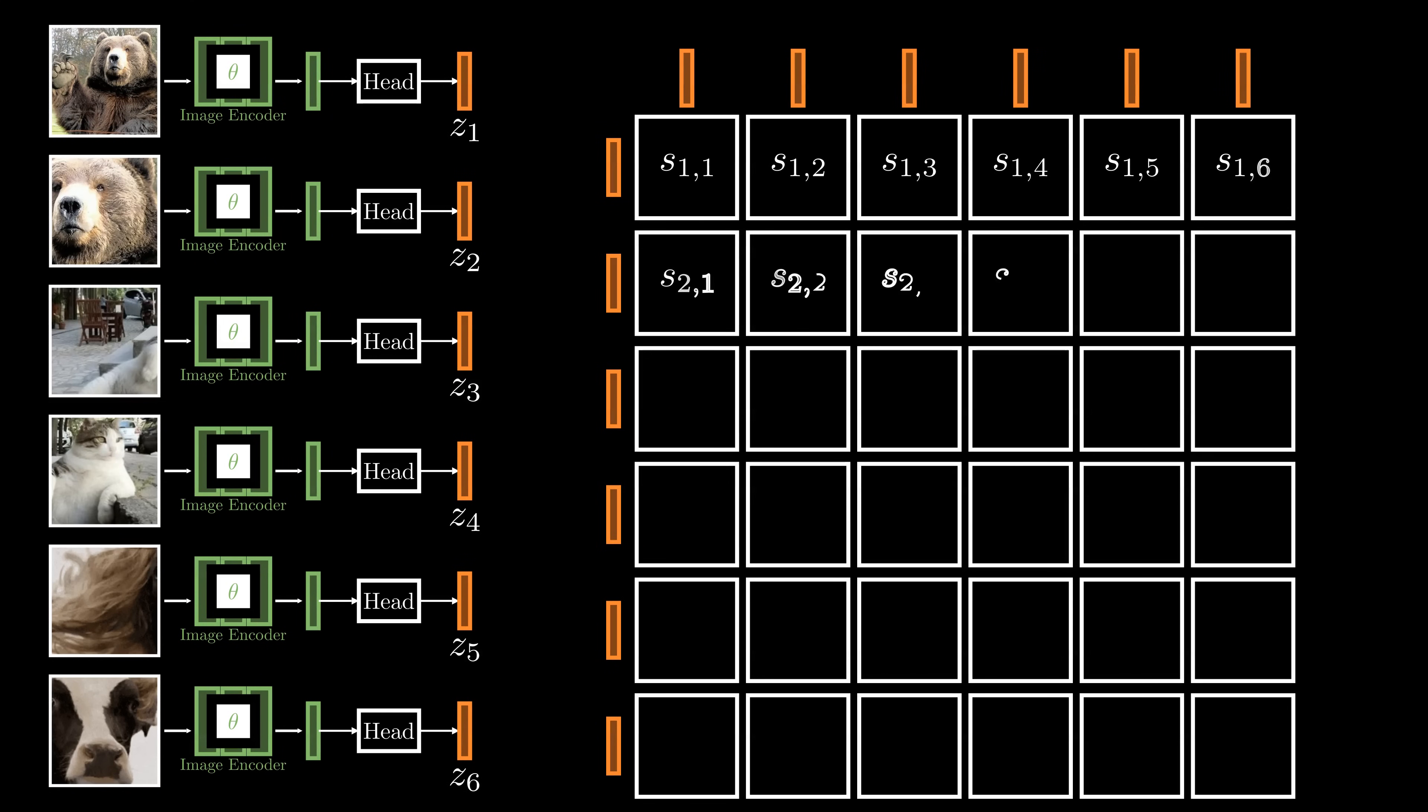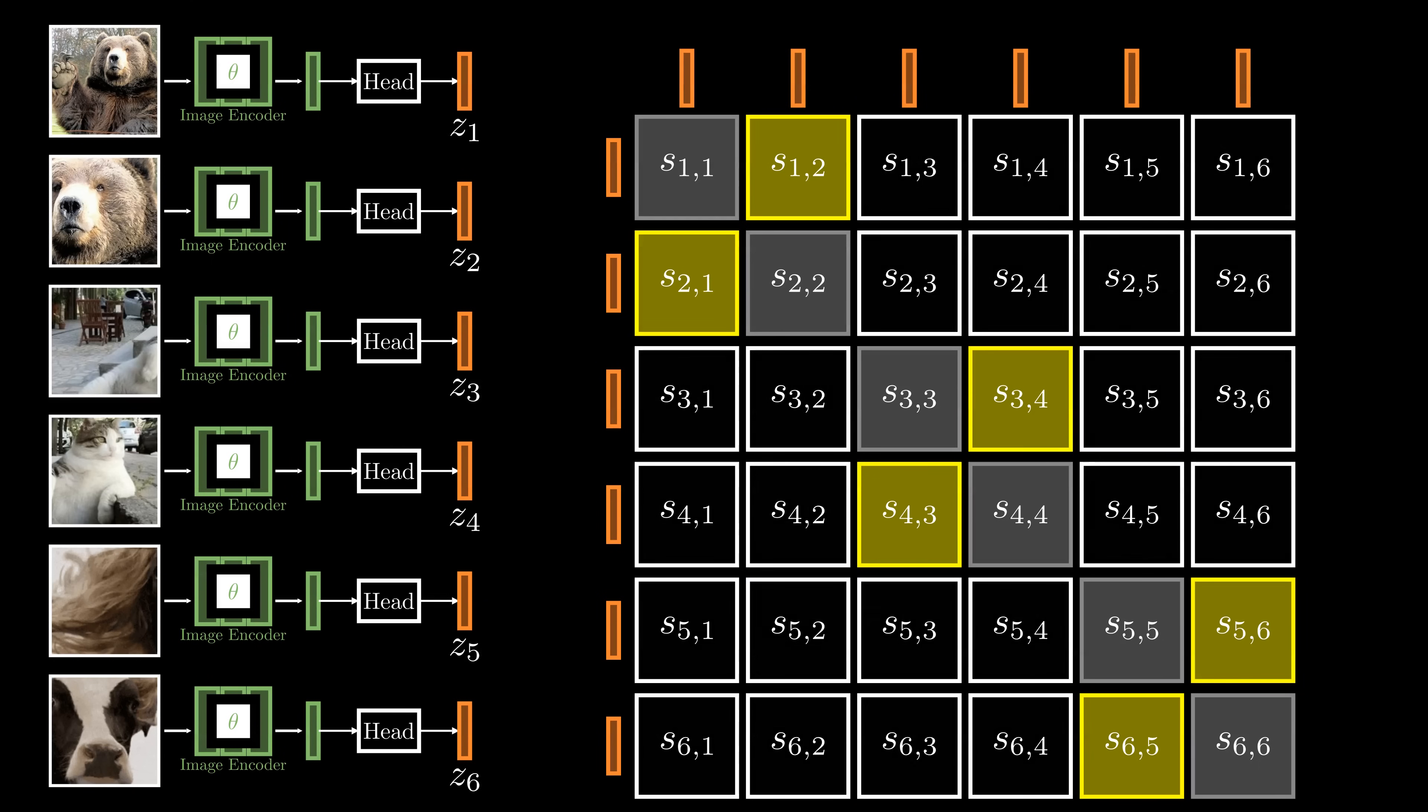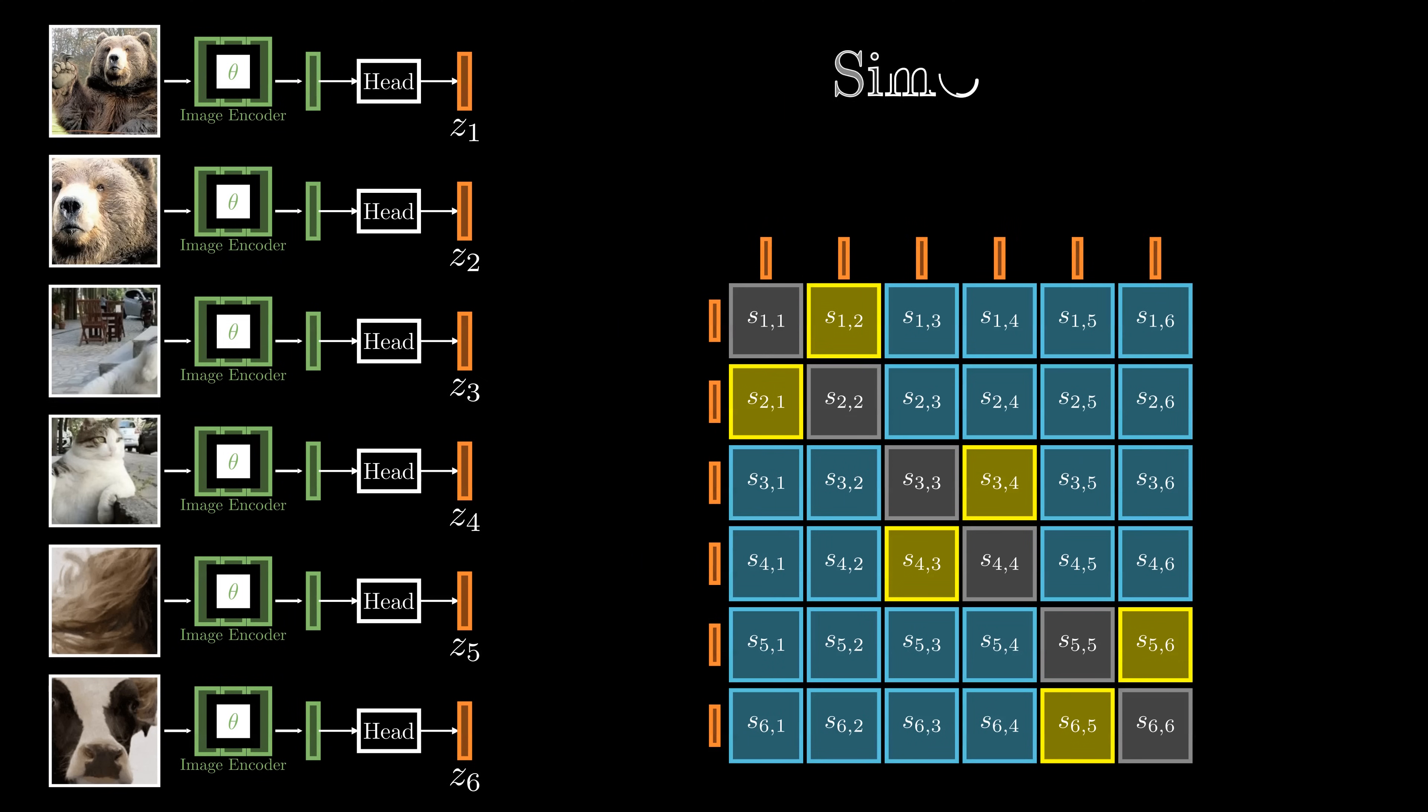Here, Sij denotes the similarity score between i's embedding vector and j's embedding vector. We highlight positive pairs with yellow boxes and negative pairs with blue boxes. During training, the model learns to increase the similarity for positive pairs. Intuitively, we train the model to extract feature representations that are stable under different augmented views. This is the core idea of SimCLR.